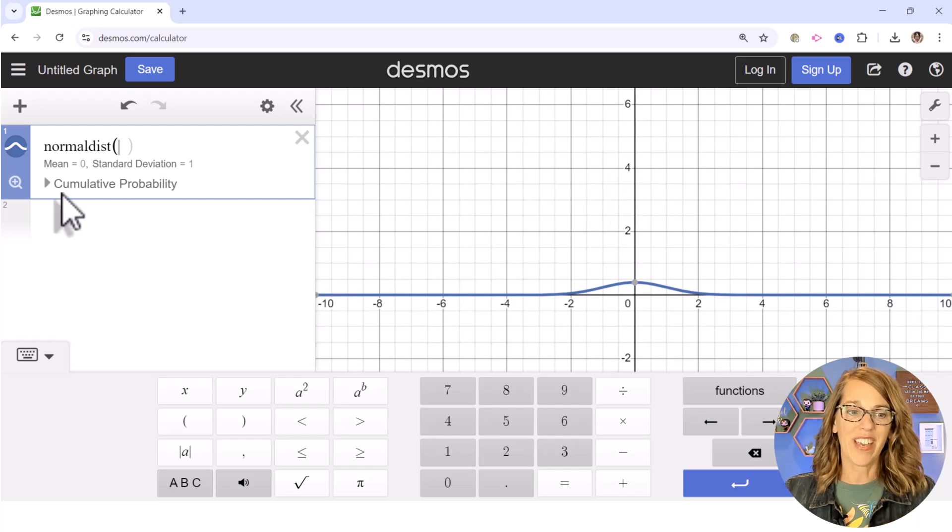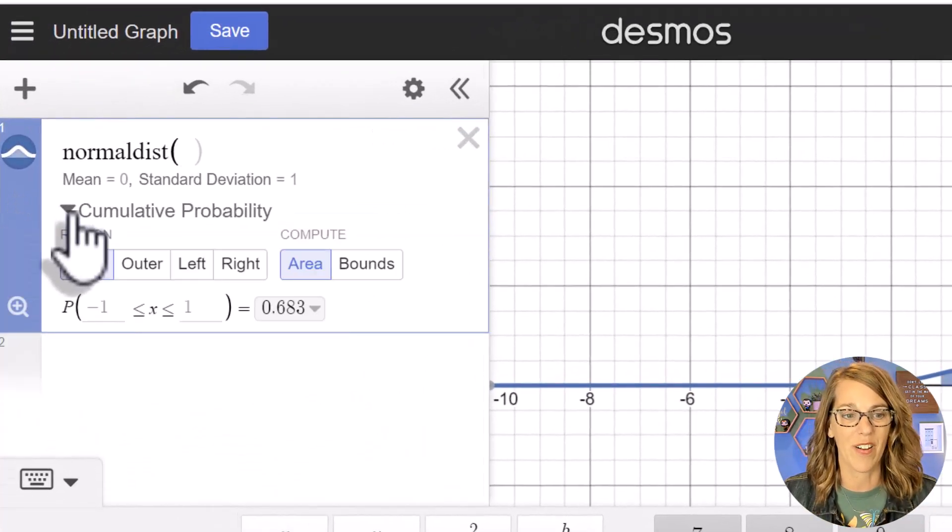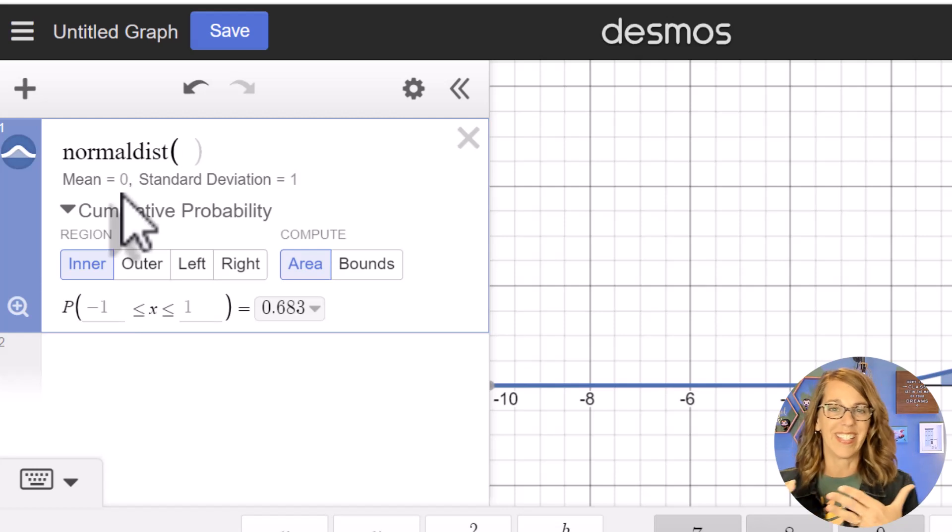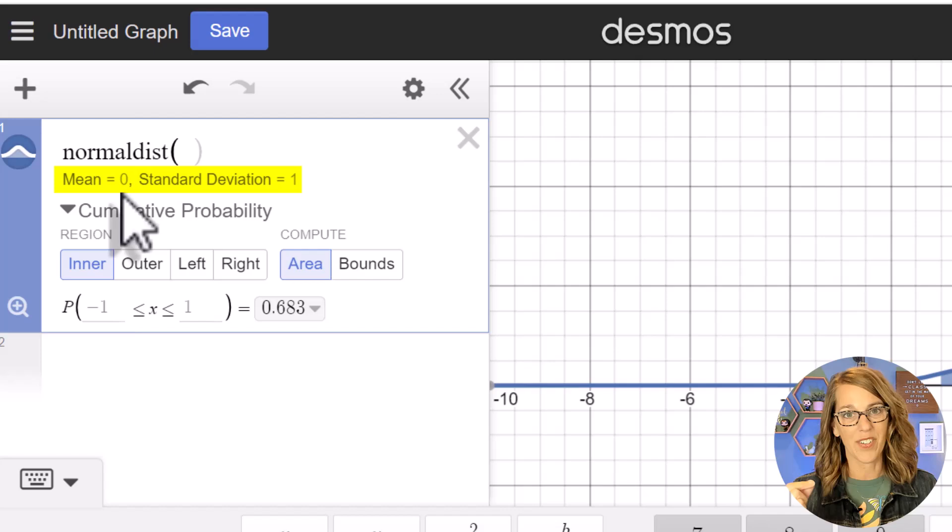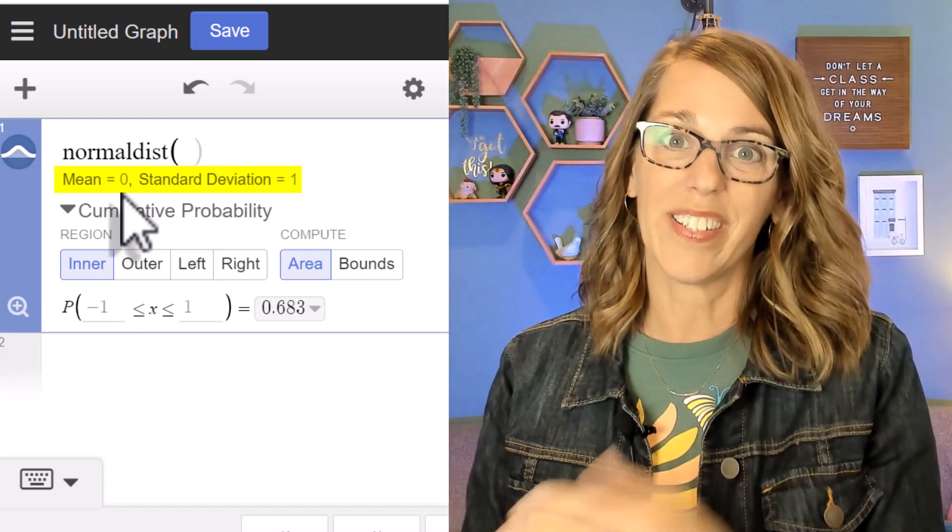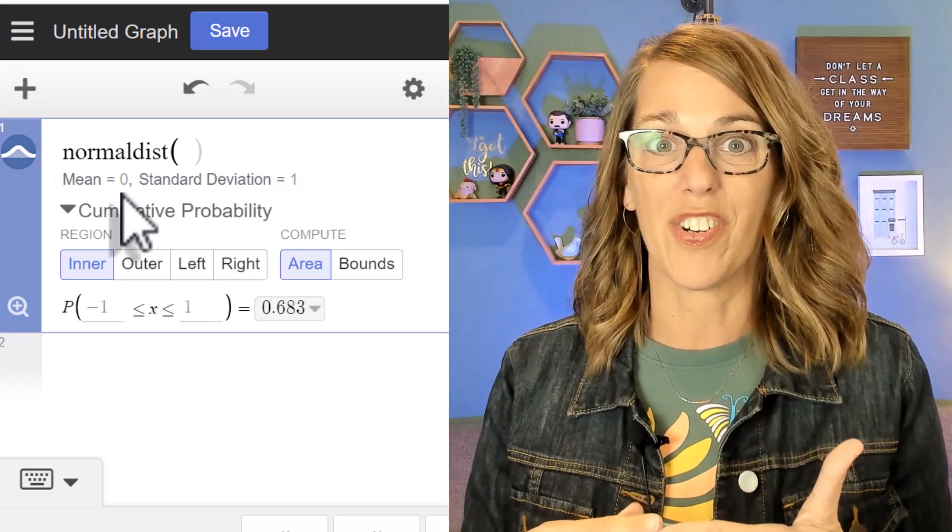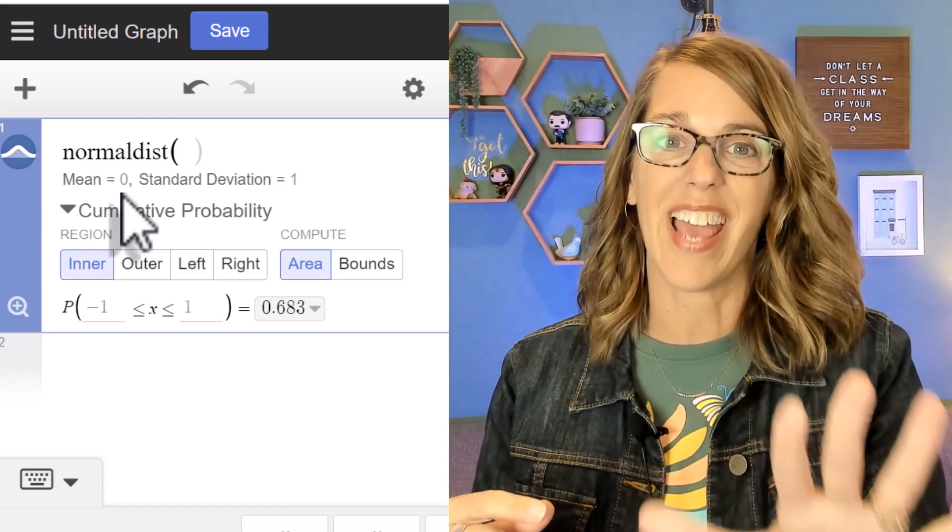In order to do that, I'm going to click this cumulative probability arrow. Notice that I'm on the standard normal curve. That's when my mean is 0 and my standard deviation is 1. I do have an example where the mean and standard deviation are different, but for now this is exactly what we want.